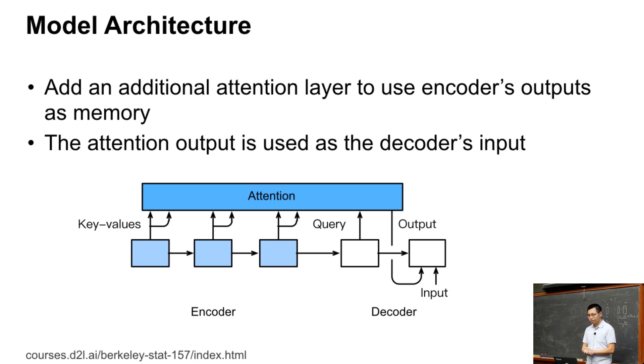Then in the decoding step, the hidden state output of the last timestamp, I input as a query to the attention. Then the output of this attention layer will be used as an additional input to the current timestamp of the decoder.